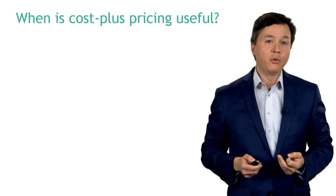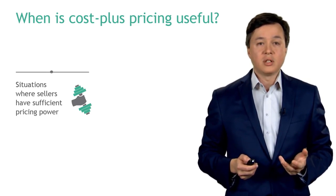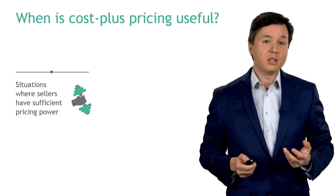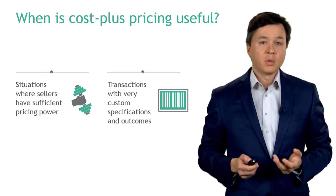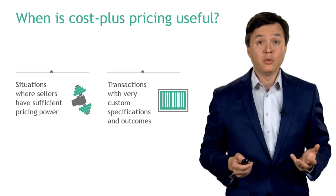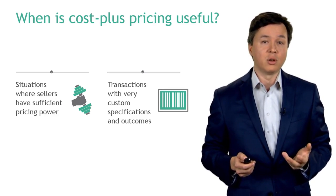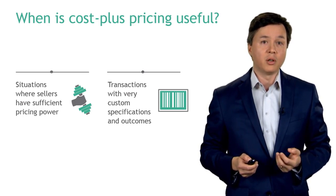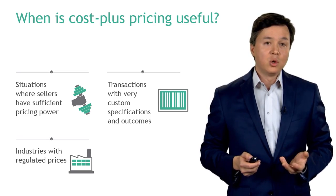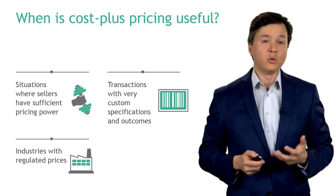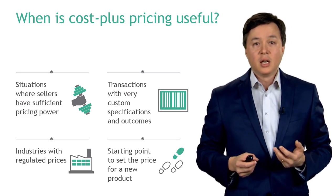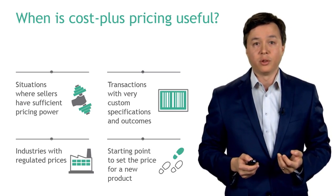Cost plus pricing is useful in four situations. First, when you as a seller have sufficient pricing power where you can demand your price and the buyer will pay it. Second, in situations where the outcome and specifications of your offering are very custom and you may not know the true costs upfront, so you focus on the markup the customer will pay on top of cost. Third, in industries with regulated prices — for example, ensuring utilities can recover their costs to provide services like power. And lastly, cost plus pricing is a starting point for the journey to figure out the right selling price for a product.